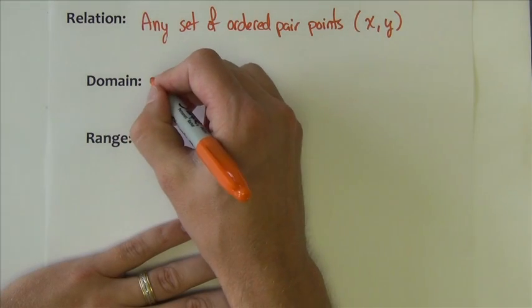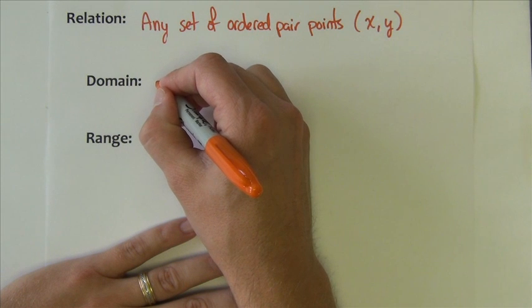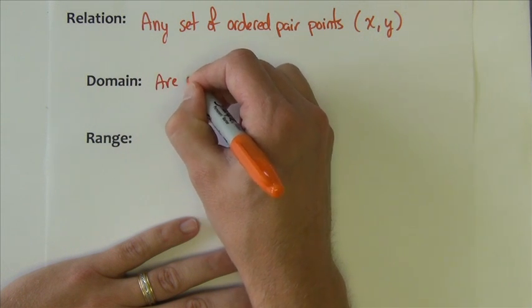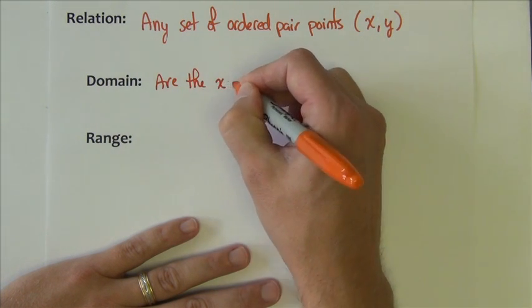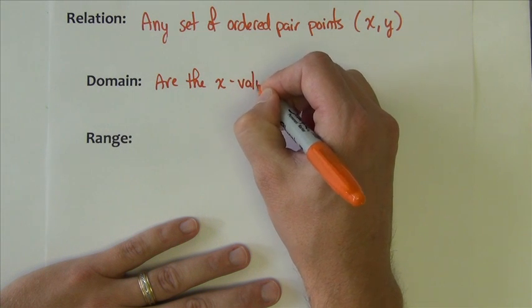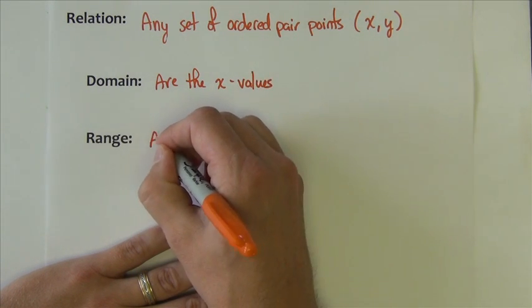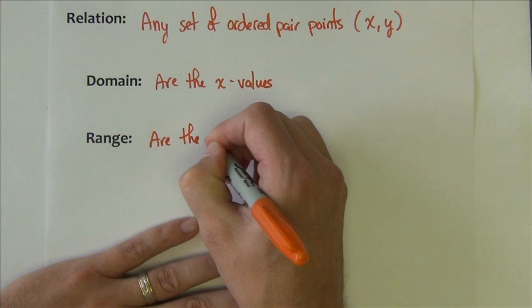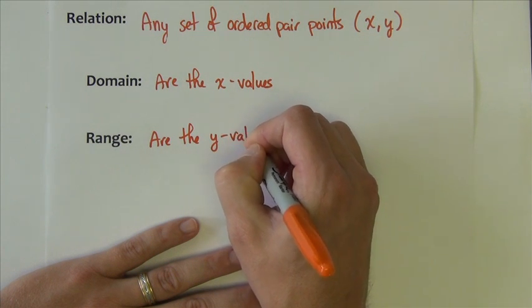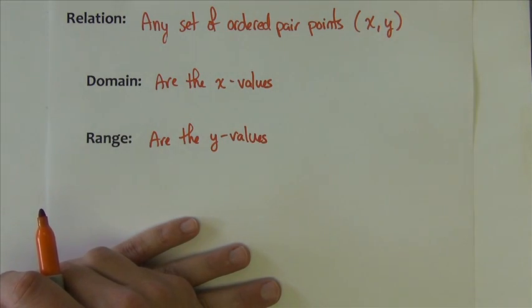Now, the domain of a relation, domain are the x values, range are the y values. So domain and range x and y values respectively.